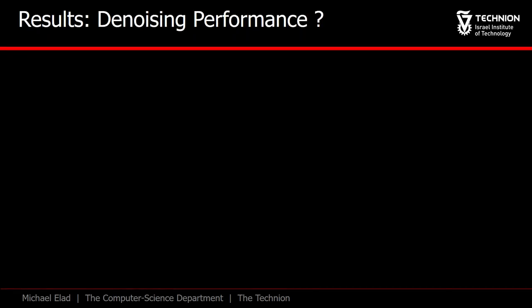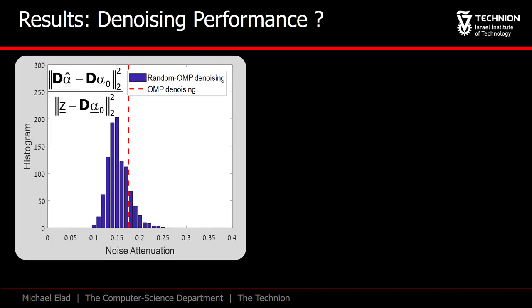Now let's talk about denoising performance. Each and every one of these solutions is a denoiser. All that we should do is multiply it by d, and this is a candidate's cleaned version of z.